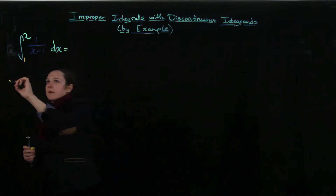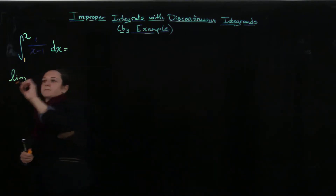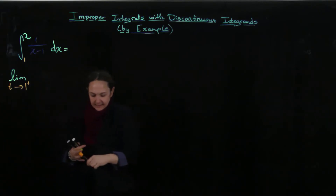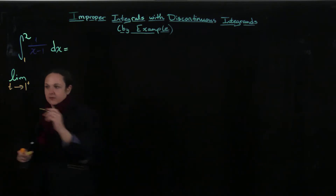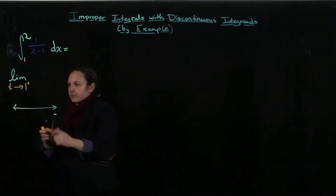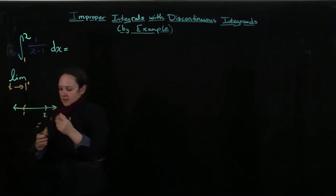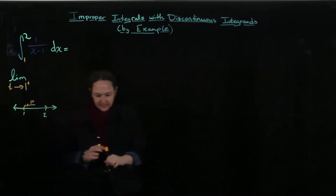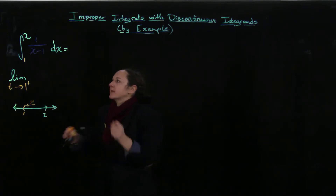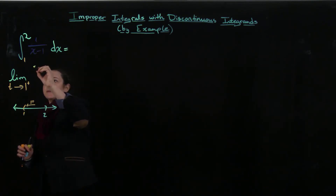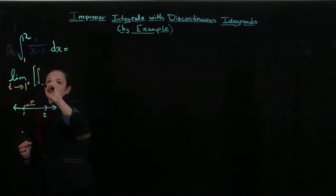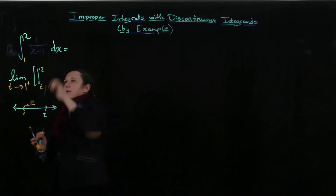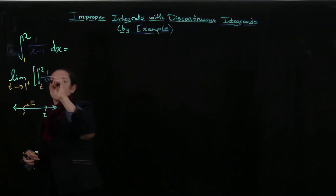So this is going to equal the limit as T goes to 1. And why do I want to approach from the right-hand side? I'm looking at the interval from 1 to 2, and I want to stay within the interval, so I want to approach from this side. So I'm going to take the integral and replace this 1, which is my problematic bound, with a T, and keep my 2. The integrand is still 1 over x minus 1 dx.